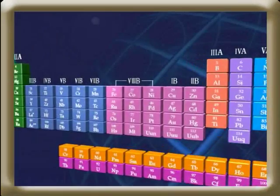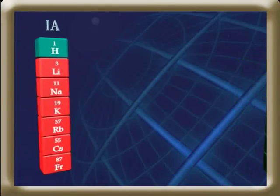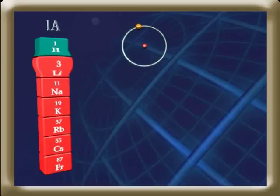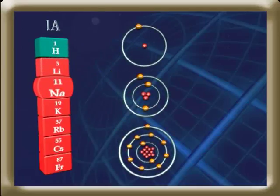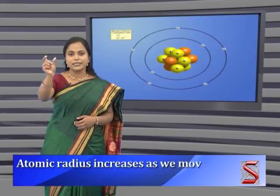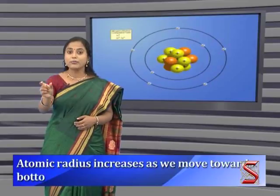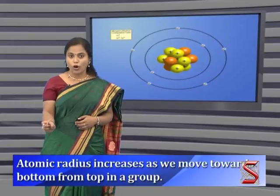What happens in a group? As we move from top to bottom in a group, an extra shell of electrons gets added, thus increasing the atomic size. So atomic radius increases as we move from top to bottom in a group.